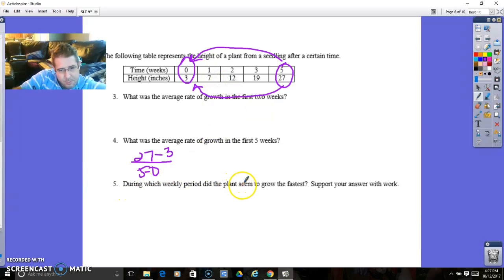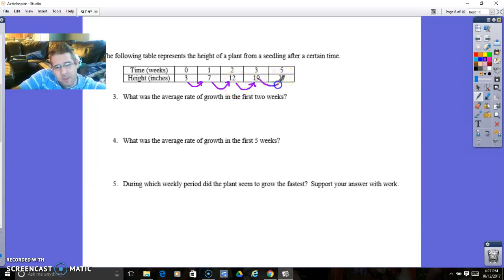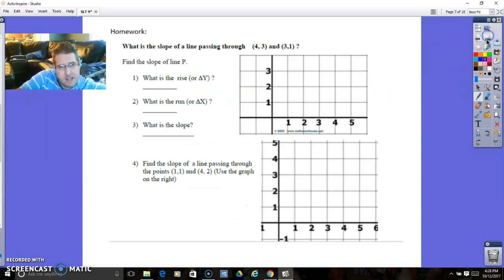During which weekly period did the plant seem to grow the fastest? I'm going to find the amount it grew per week. This increased by 4, this increased by 5, this increased by 7. This one increased by 8, which is more than 7. But you've got to take notice that this is over a time period of 2 weeks, so that's really only increased by 4 inches per week, whereas this is 7 inches in 1 week. So really from 2 to 3, from the interval of 2 to 3 is when it increased the most. 7.